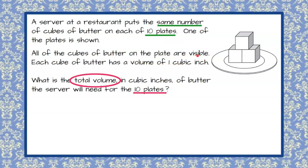Since all cubes of butter on the plate are visible, and each cube of butter has a volume of one cubic inch, we know that the volume of each of these three cubes is 1, and together the volume of all three is 3. 1 plus 1 plus 1.